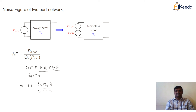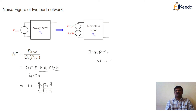So, G_A cancels, k cancels, and B cancels. Therefore, the noise figure of the two-port network is given as NF equal to 1 plus T_e divided by T.